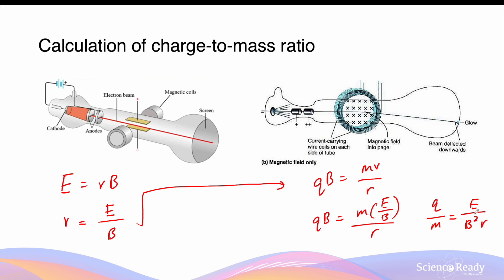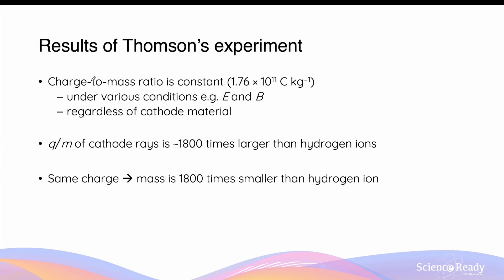In Thomson's experiment, since the values of the electric field strength and the magnetic field strength are known, and the radius of the cathode ray in the last part of the experiment can be measured, Thomson was able to calculate the exact value of the cathode ray's charge-to-mass ratio. Thomson showed that the charge-to-mass ratio of cathode rays was constant, at a value of 1.76 times 10 to the power of 11. This value remained consistently the same under various conditions, such as when different values of electric and magnetic fields were used, and regardless of the cathode ray material used to produce the cathode ray.